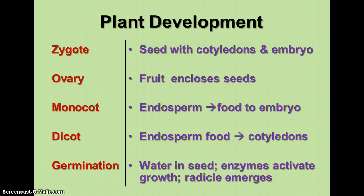The ovary is a fruit that encloses the seeds. In monocots, the endosperm, which is produced from double fertilization, provides food to the growing embryo and usually stays underground.